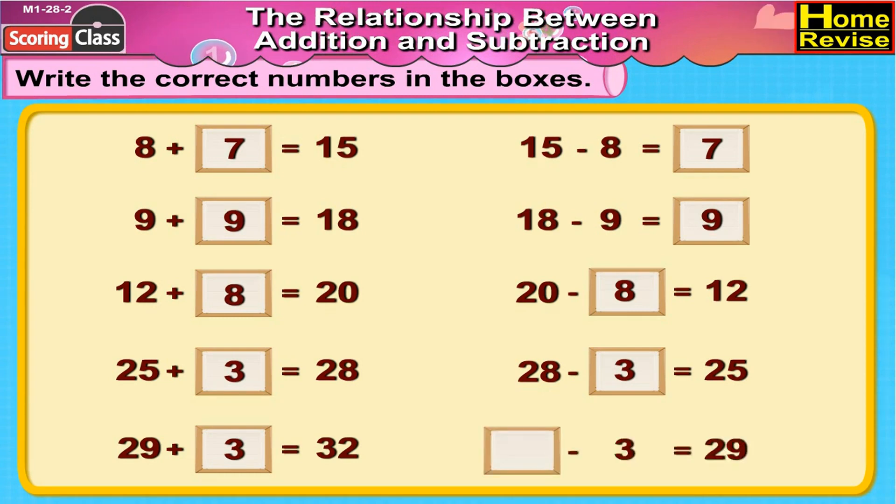Now dash minus 3 is equal to 29. Can you guess the answer? 32 minus 3 is equal to 29. Children, you have understood the relationship between addition and subtraction perfectly.